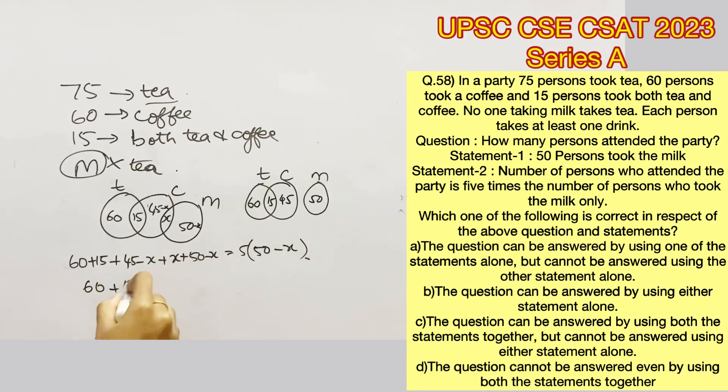Now this equation cannot be applied for the second case that we assumed. Because if we add the total number of people in the second case, we would get 170, whereas 5 times those who chose milk alone is 250. So we can eliminate this case on the whole.